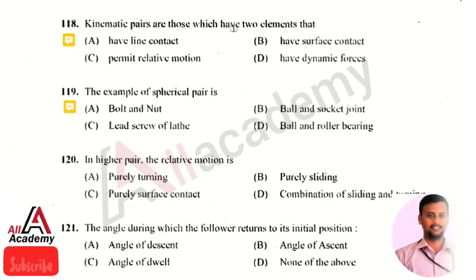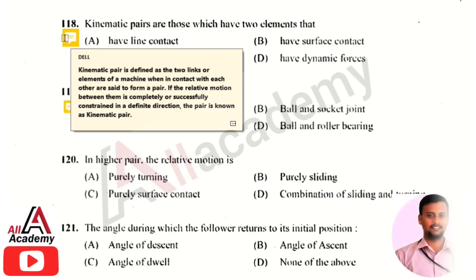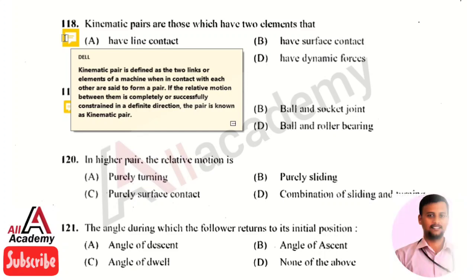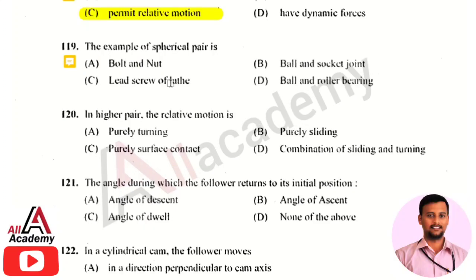Kinematic pairs are those which have two elements that permit relative motion. A kinematic pair is defined as two links or elements of a machine which, when in contact with each other, form a pair. If the relative motion between them is completely constrained in a definite direction, the pair is known as a kinematic pair.